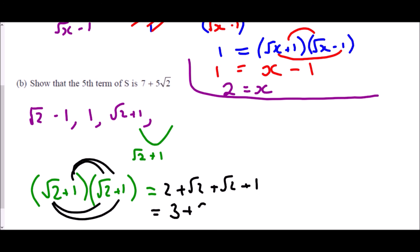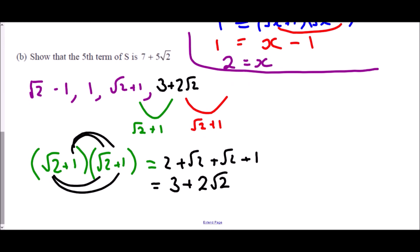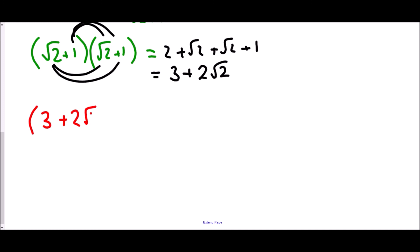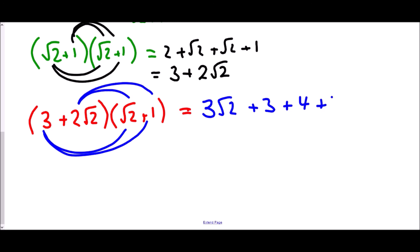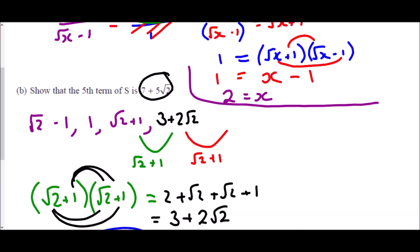To find the fifth term, multiply (3 + 2√2) by (√2 + 1): 3 × √2 = 3√2, 3 × 1 = 3, 2√2 × √2 = 4, and 2√2 × 1 = 2√2. Collecting terms: 3 + 4 = 7 and 3√2 + 2√2 = 5√2. So the fifth term is 7 + 5√2, which is exactly what we were asked to show.